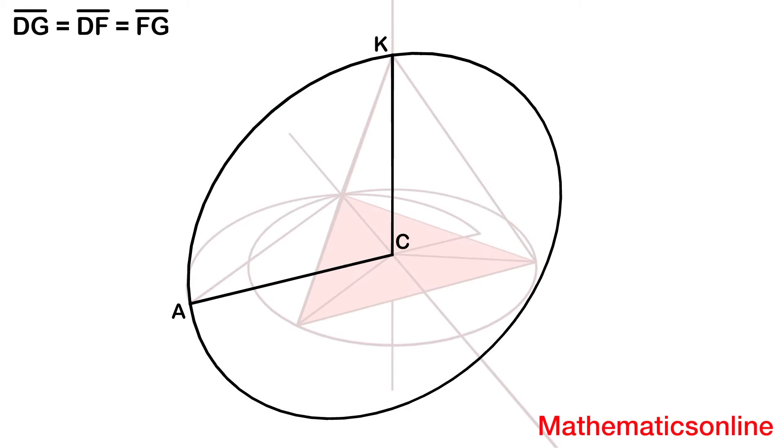So if we take a look at this circle, the radii are equal lengths, so AC is equal to CK.